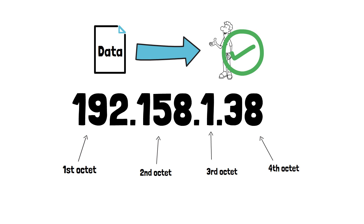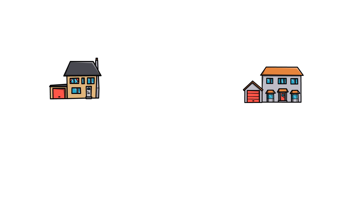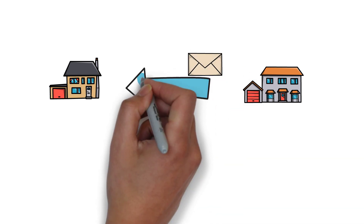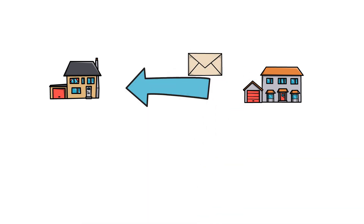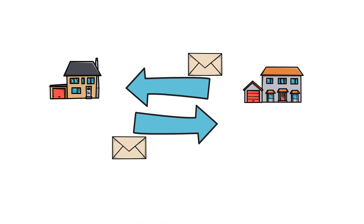A useful comparison is to think of an IP address like your home address. If you send a letter to a friend, you'll put your address as the return address on the back of the envelope to ensure they know where to send the reply. This is essentially what happens when you're sending a request for data to another device on the internet.